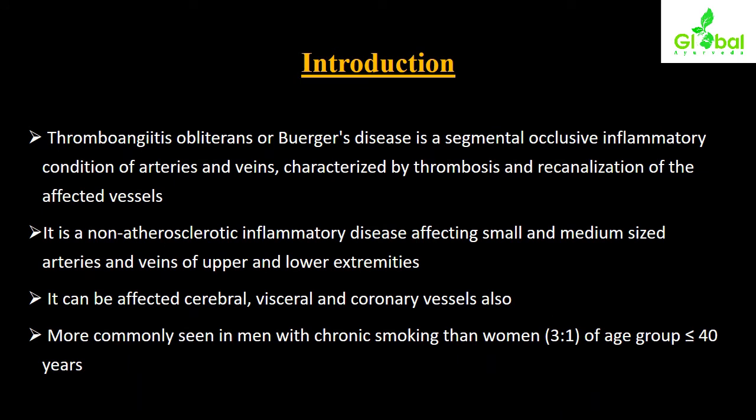Thromboangiitis obliterans, also known as Buerger's disease, is a segmental occlusive inflammatory condition of arteries and veins characterized by thrombosis and re-canalization of the affected vessels.